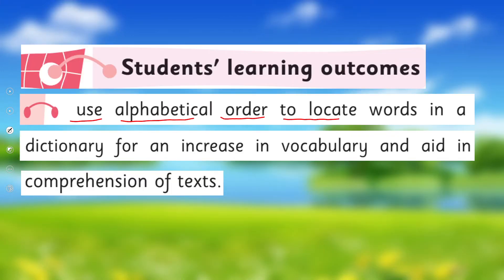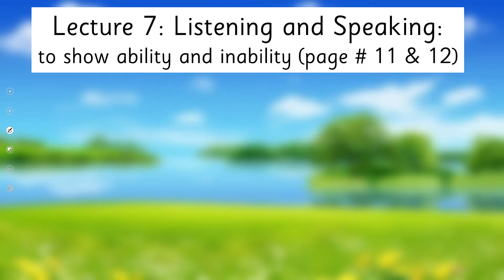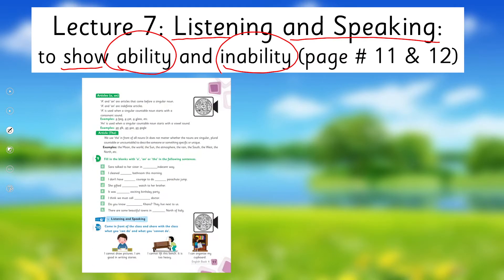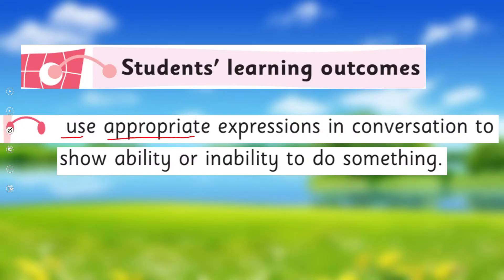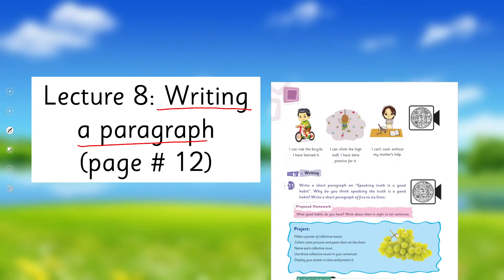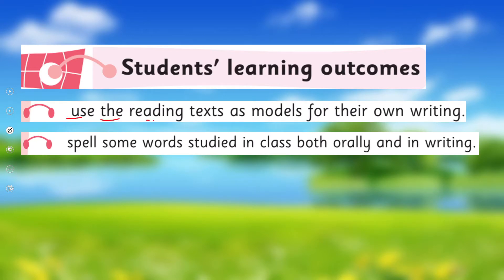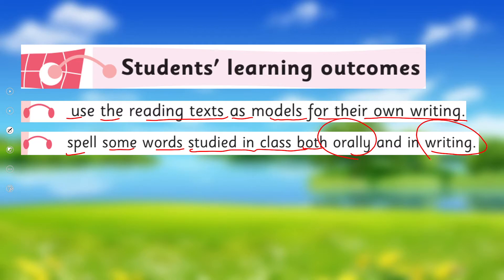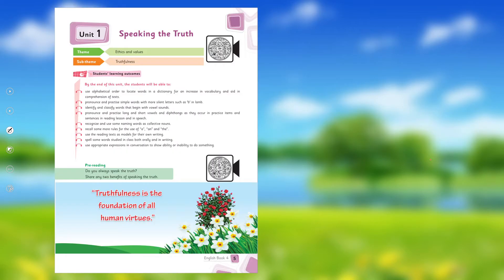Lecture 6 will continue reading, covering pages 6, 7, and 10, with the SLO to use alphabetical order to locate words in a dictionary for vocabulary increase and comprehension. Lecture 7, under listening and speaking, will cover showing ability and inability, pages 11 and 12, with the SLO to use appropriate expressions in conversation. Lecture 8 covers writing a paragraph, page 12, with the SLO to use reading text as models for writing and to spell words studied in class.